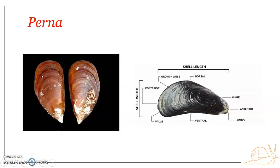A typical bivalve example is Perna. Perna, commonly known as the sea mussel, is an edible, sedentary marine mollusk that lives in large numbers in the intertidal zone of coastal waters, usually attached to rocks, stones, or other hard surfaces. Large populations of Perna inhabiting vast areas of rocky shores are known as mussel beds.